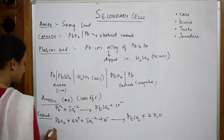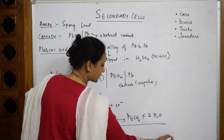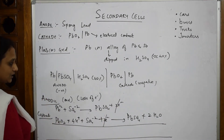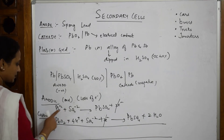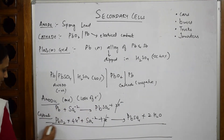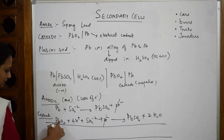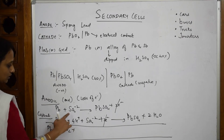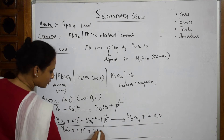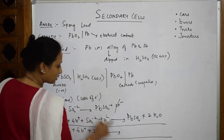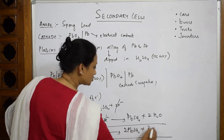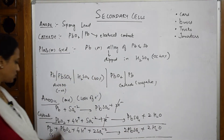For the overall reaction, the 2 electrons cancel out. Combining both half-reactions: Pb + PbO₂ + 4H⁺ + 2SO₄²⁻ → 2PbSO₄ + 2H₂O. This is the overall cell reaction for the lead storage battery during discharge.